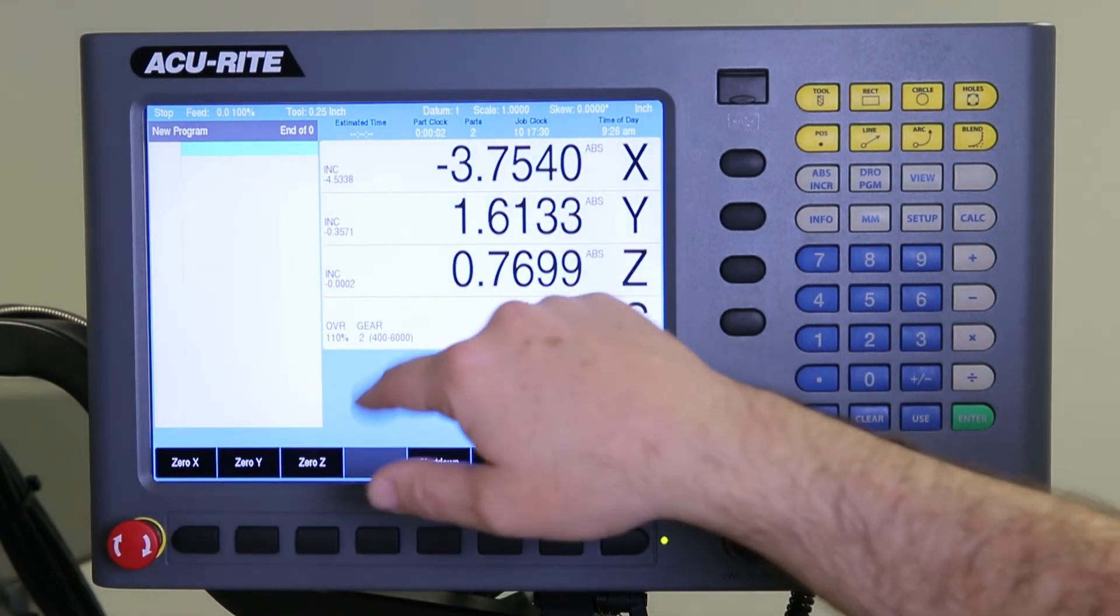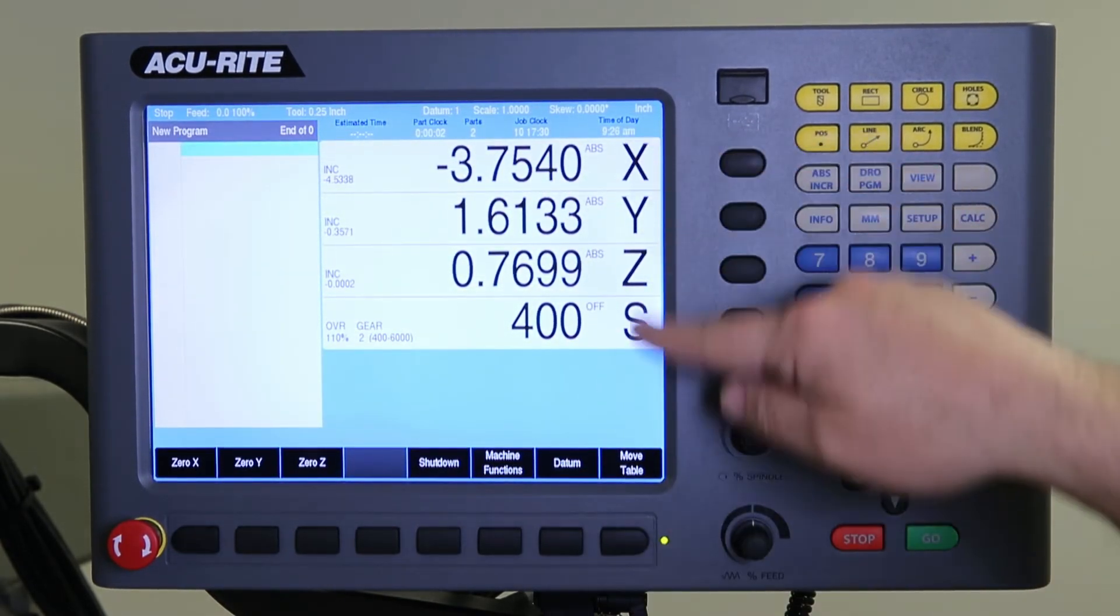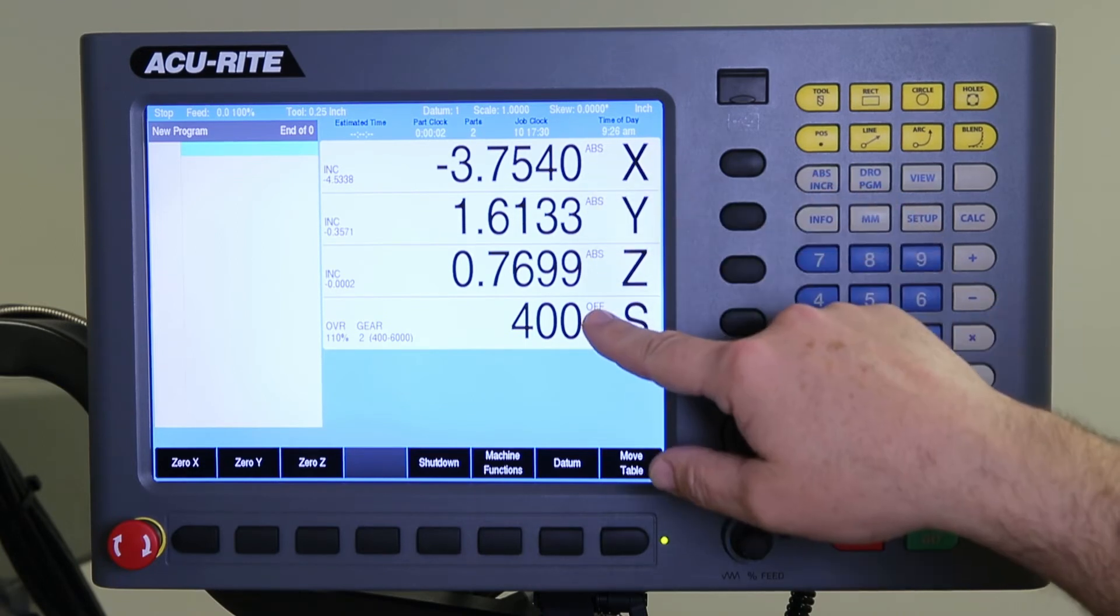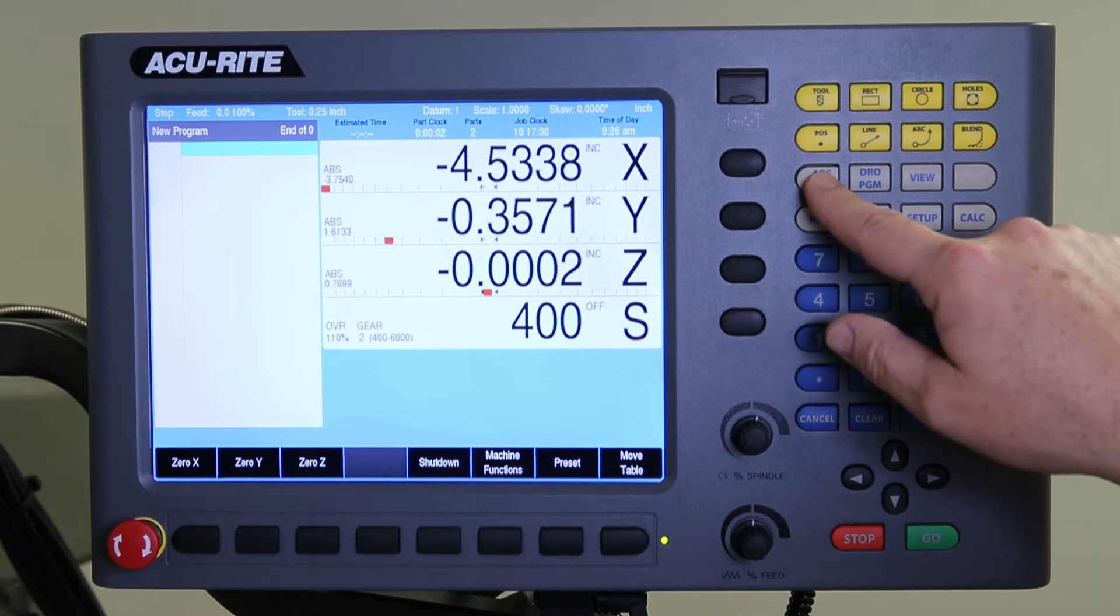We display estimated machining time, parts clock, parts counter, job clock, and time of day. Of course this is the DRO display. We're showing digits here in absolute mode but we can obviously toggle between absolute and incremental at any time.